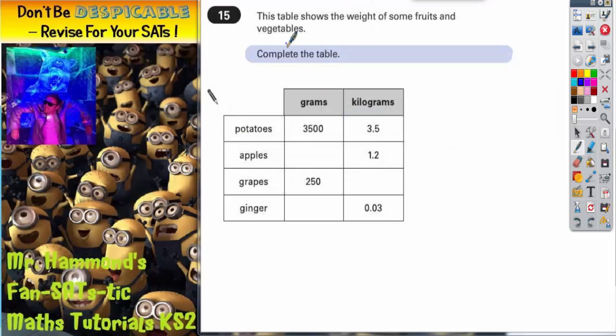Question 15. This table shows the weight of some fruits and vegetables. Complete the table. So we've got potatoes, apples, grapes and ginger, and we've got a column for grams and a column for the equivalent weight in kilograms. Now what we need to remember is that one kilogram is the same as one thousand grams, and this will be crucial.